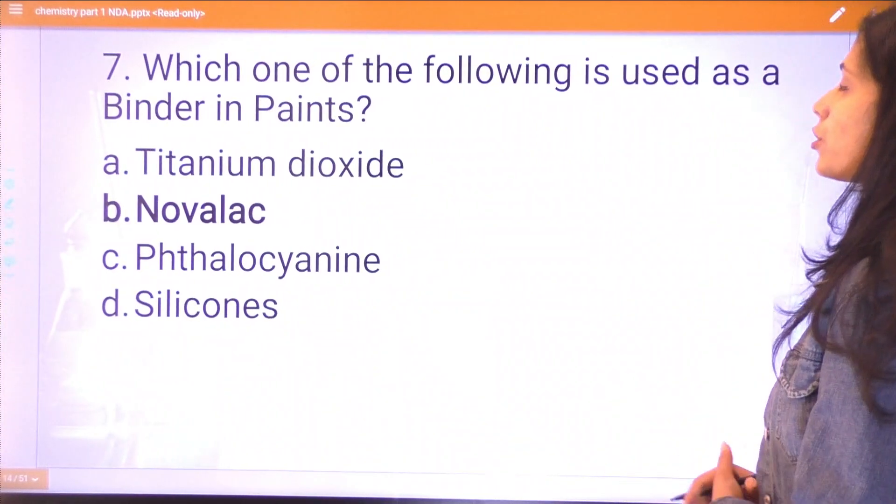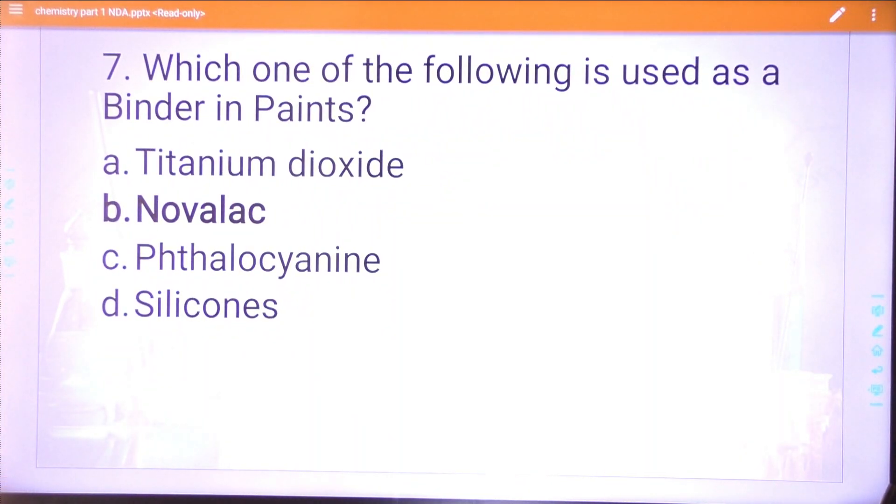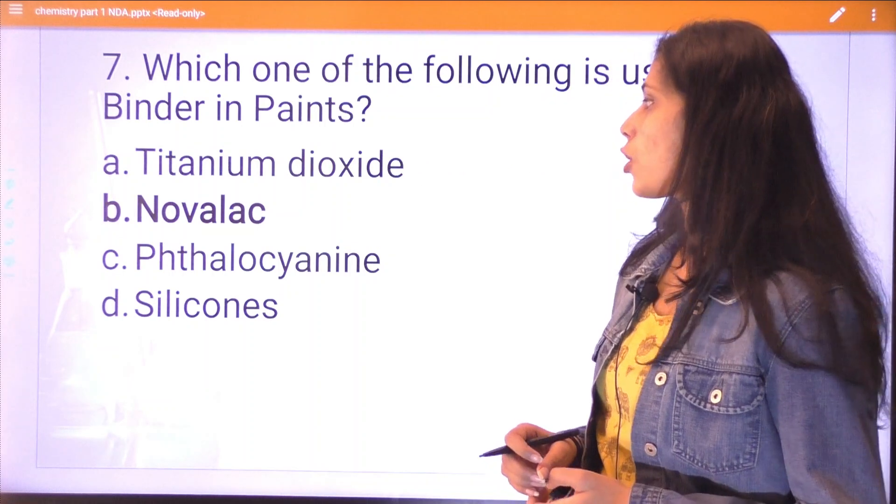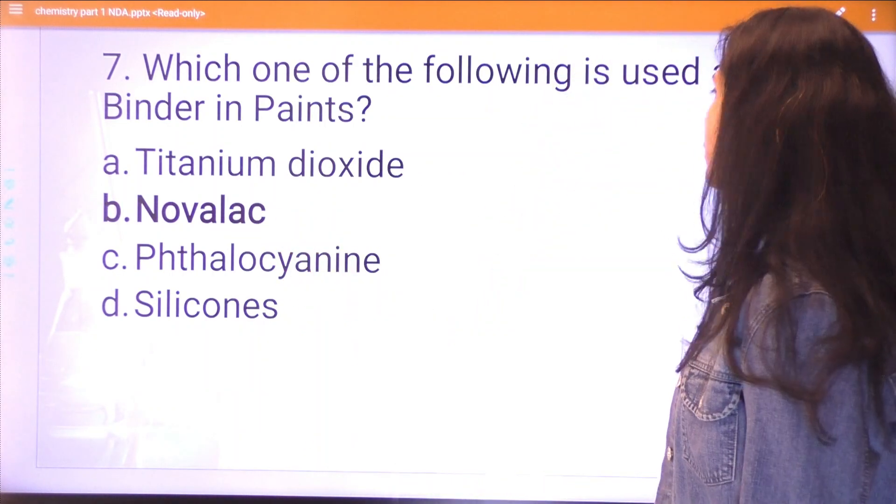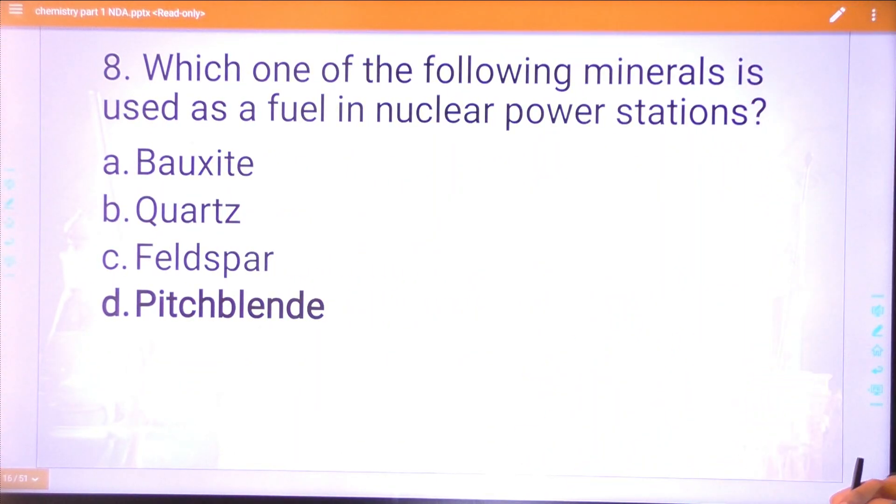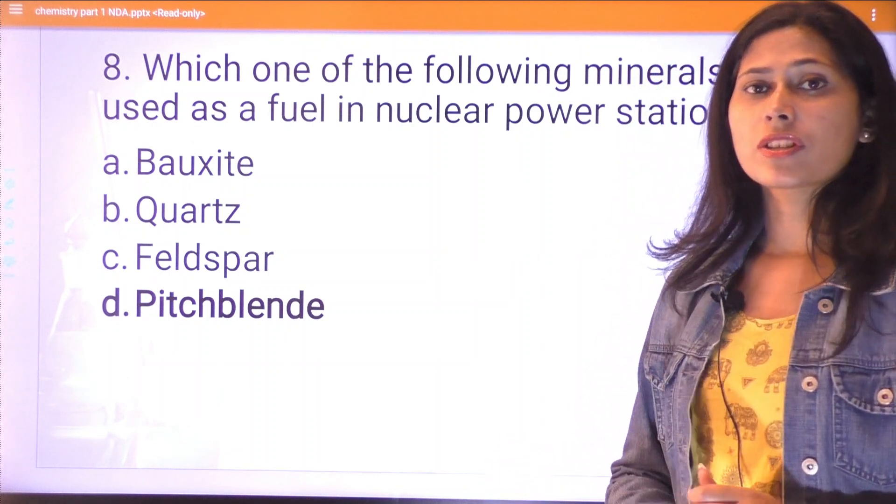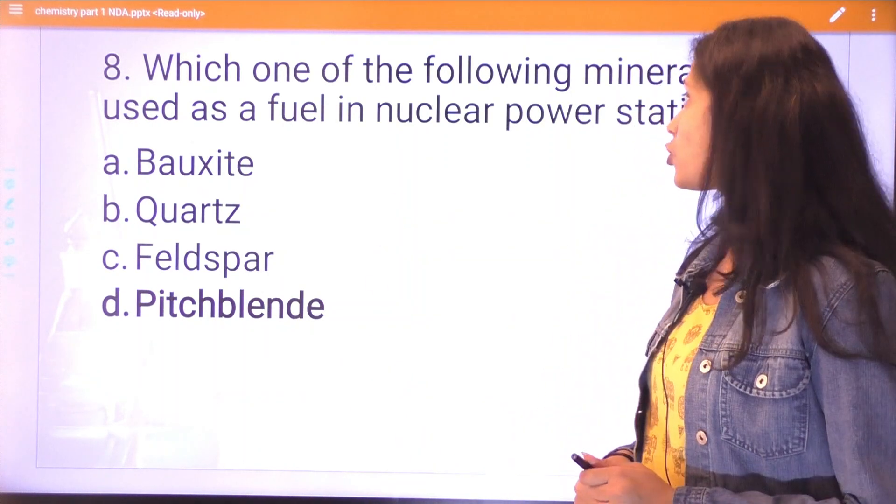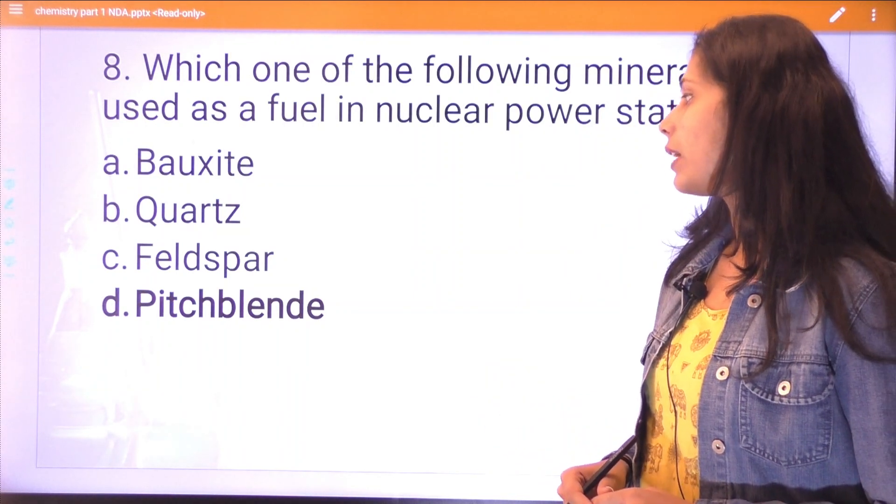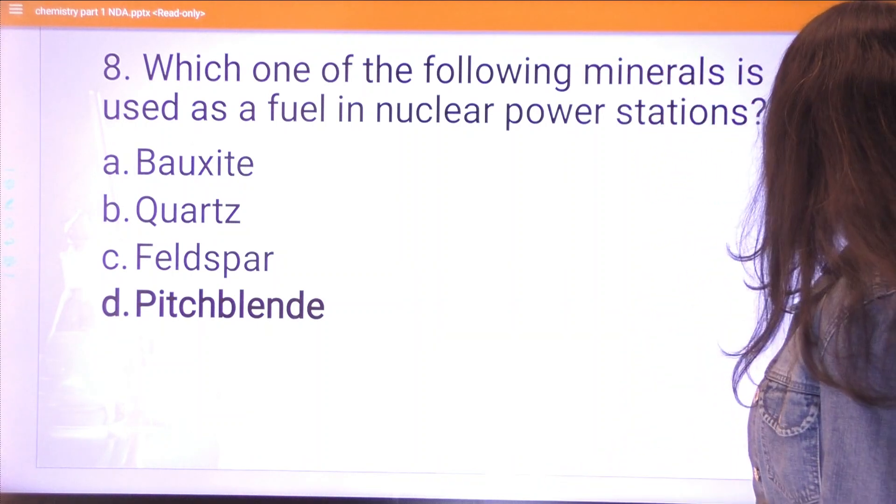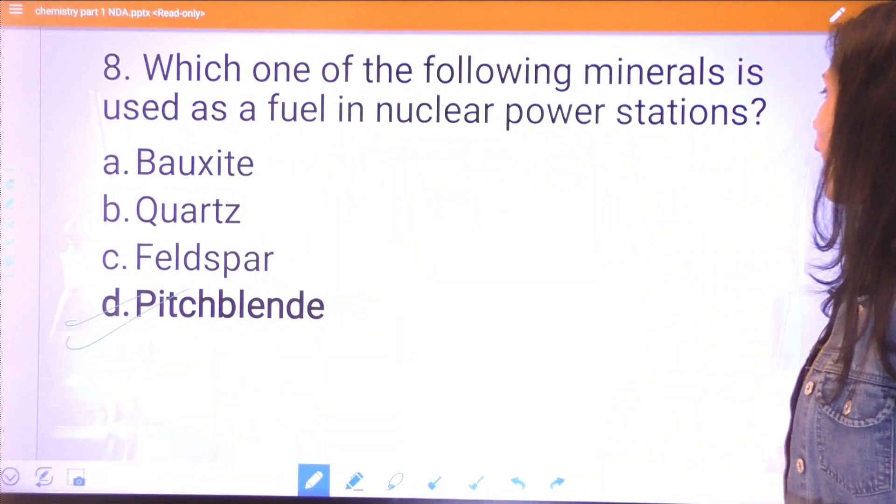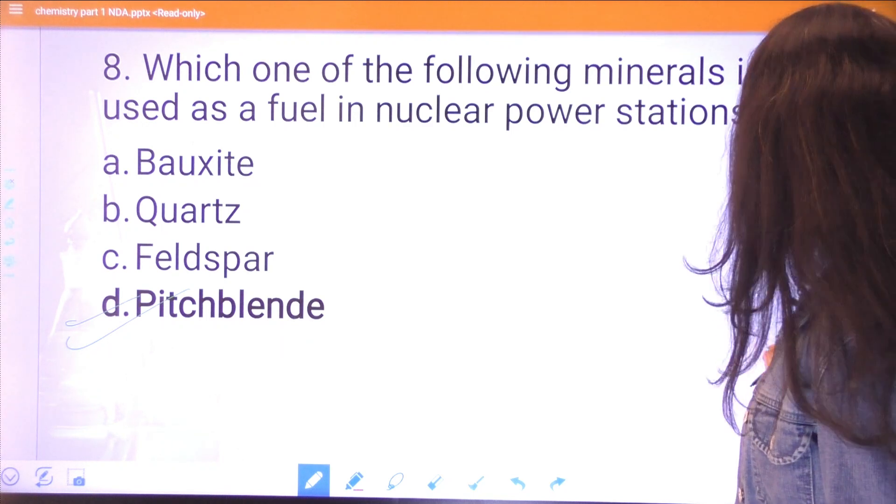The seventh question: which one of the following is used as a binder in paints? Novolac is the binder in paints. The next question: which one of the following minerals is used as a fuel in nuclear power stations? Your options are bauxite, quartz, feldspar, or pitch blend. Pitch blend is used in the nuclear power station as the fuel.